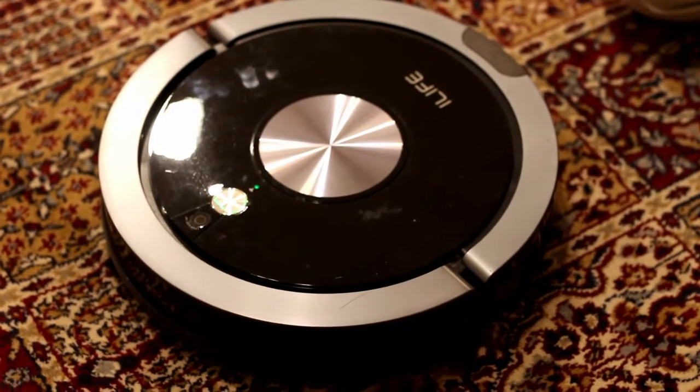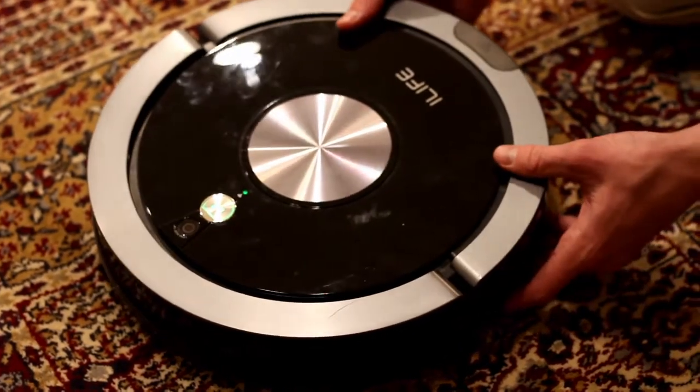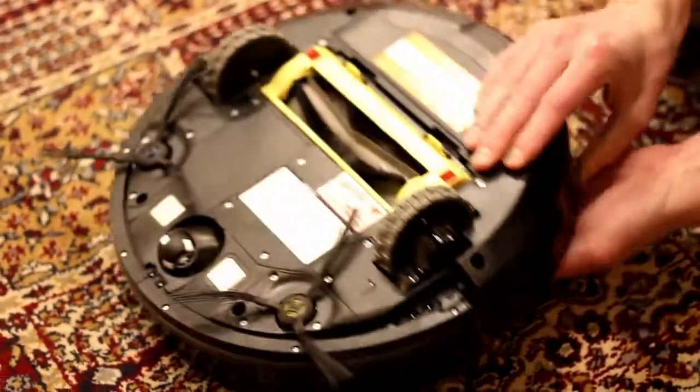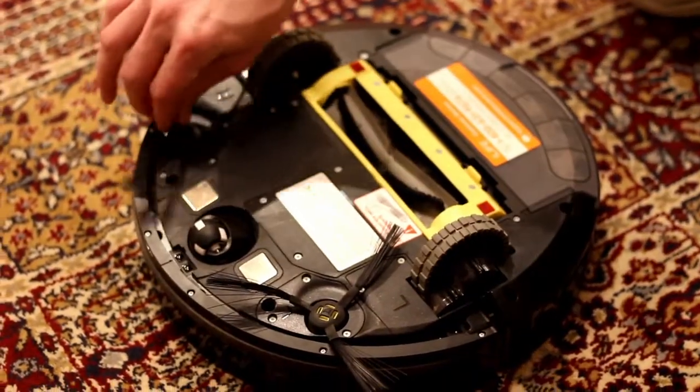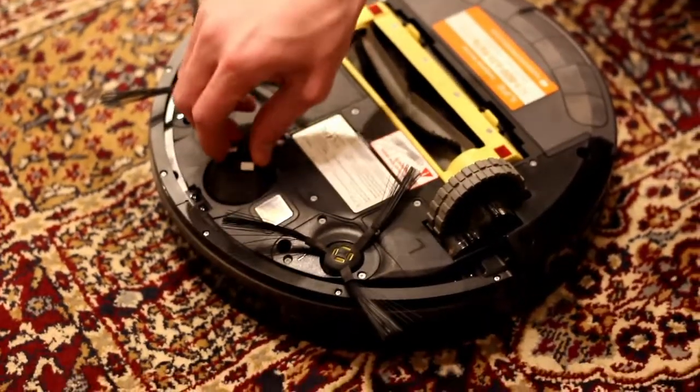If your iLife A9 vacuum cleaner, like mine, has developed a strange problem where it constantly changes direction and runs into obstacles that aren't really there, you may need to clean the sensor wheel on the bottom.